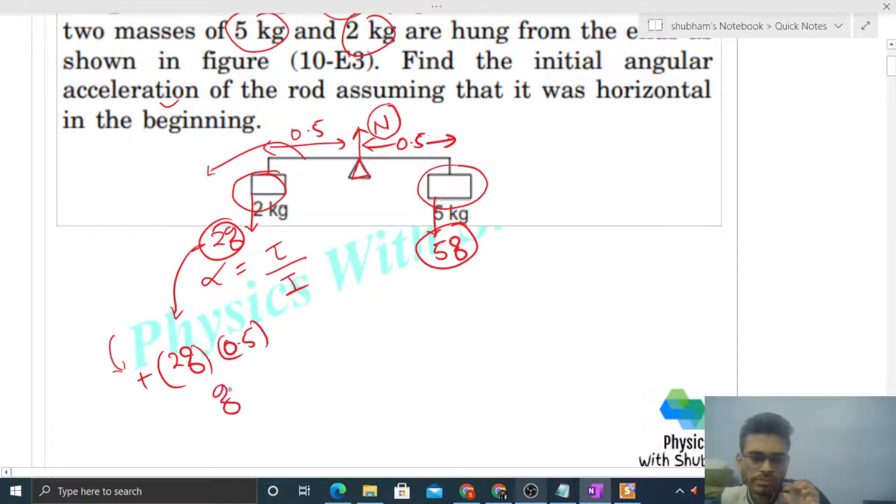Now check this torque. It is force 5g into its distance 0.5. So how much is this? 2.5g. And it will be negative because it is clockwise.